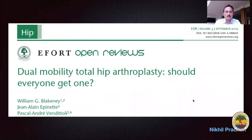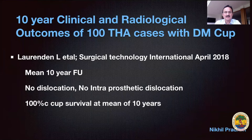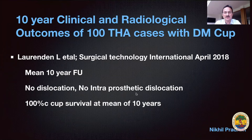Looking at three papers: one by Epinet published in September 2019 asking whether everyone should get a DM total arthroplasty; a second from August 2018 by Faris Haddad reviewing various articles and examining what the evidence shows; and a third, a 10-year clinical and radiological outcome study of 100 consecutive THAs by Loren Dunn et al., April 2018. They found no dislocations, no intra-prosthetic dislocations, and 100 percent cup survival at a mean of 10 years.